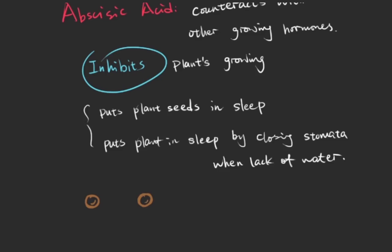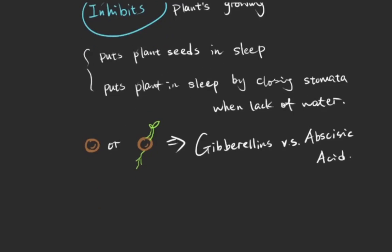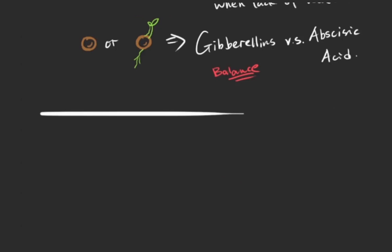But again, a plant's behavior is not determined by a type of hormone alone. For example, if a seed will germinate or not is actually depending on the counteraction of gibberellins versus abscisic acid. And that seed will only germinate when the percentage of gibberellins in it overwhelms abscisic acid.